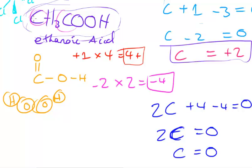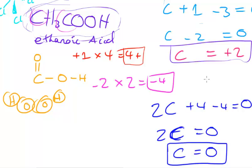So in this final case, the oxidation number of carbon in ethanoic acid (vinegar) is zero. I hope you found these examples helpful — that's the end of this video.